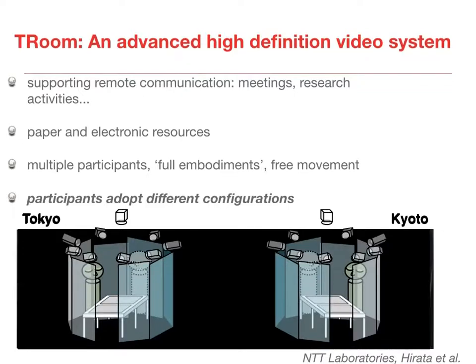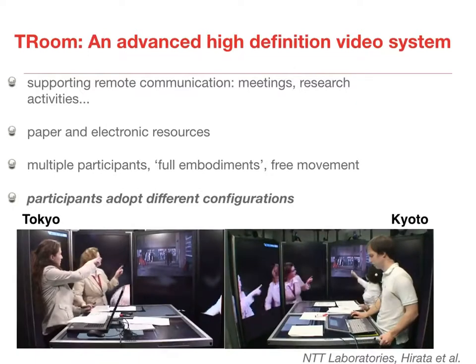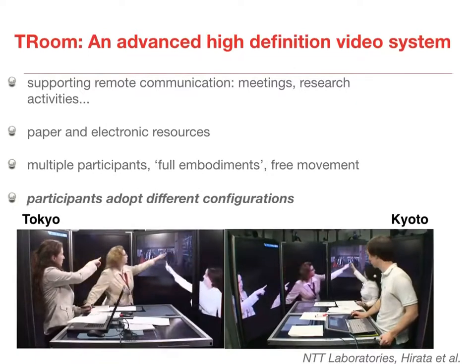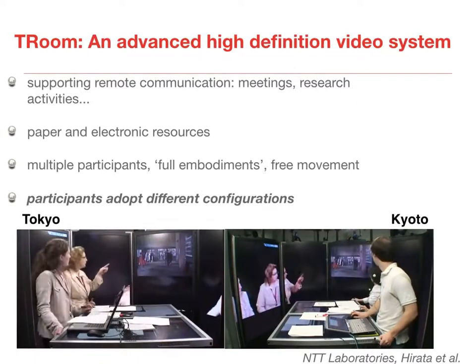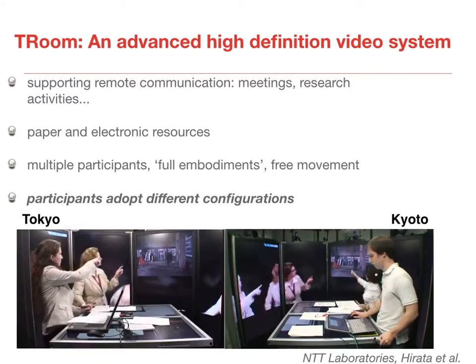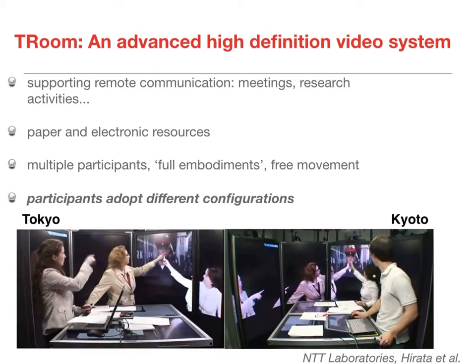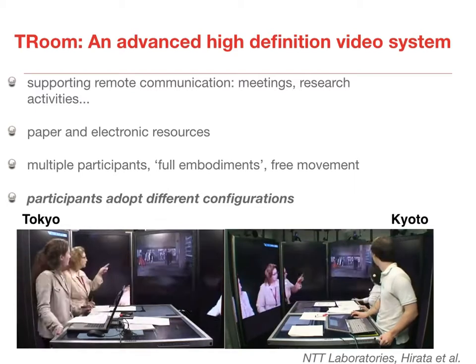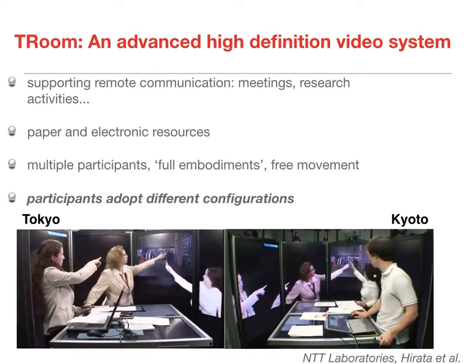T-Room is an advanced video system to support collaboration. It allows participants to see life-size images of each other and provides ways of working with both electronic and paper documents. Participants can adopt many different positions in the space.